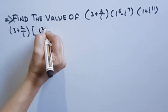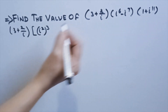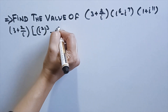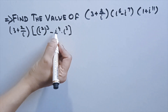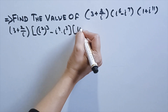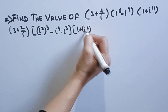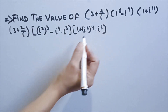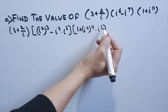i⁶ = (i²)³ since 2×3 = 6. Then i⁷ = i⁴ × i³, since 4 + 3 = 7. And i¹¹ = i⁴ × i⁴ × i³ = (i⁴)² × i³, since 4 + 4 + 3 = 11. Now we substitute the known values of i², i³, and i⁴.